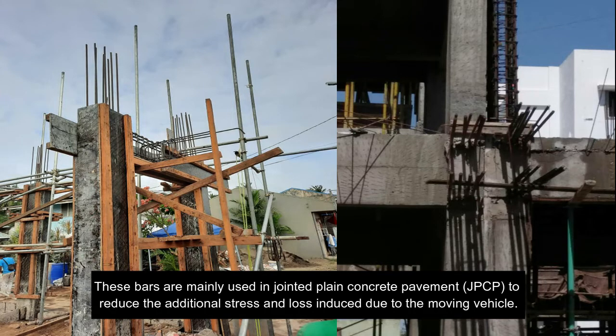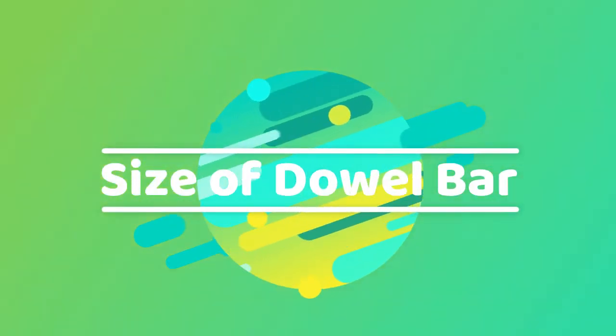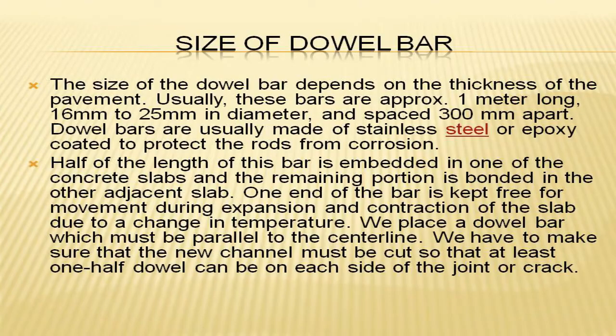The size of the dowel bar depends on the thickness of the pavement. Usually these bars are approximately one meter long, 16 millimeters to 25 millimeters in diameter, and spaced 300 millimeters apart. Dowel bars are usually made of stainless steel or epoxy coated to protect the rods from corrosion.